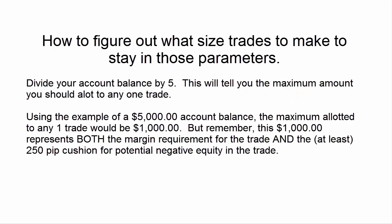Using the example of a $5,000 balance in the account, if that is divided by five, we can see that each trade should not be allotted more than $1,000 of the account balance. This $1,000 needs to represent both the margin requirement and the 250-pip cushion for the trade.